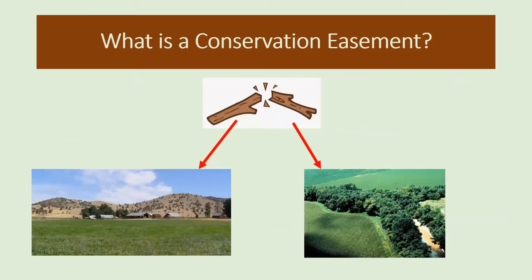A conservation easement is similar to these elements — it's a permanent encumbrance on your privately owned land. Rather than being a stick itself, I think of it more like you're breaking that stick in half where the landowner is responsible for part of that resource and the land trust is partially responsible as well. What you see in this diagram is a ranch at the lower left where the farmer can still do the ranching and farming, but in the riparian zone that crosses through that ranch, there are some resources shared with the land trust to ensure those resources stay there through time.